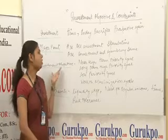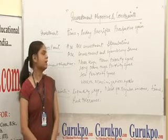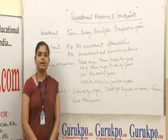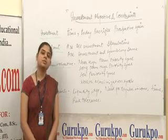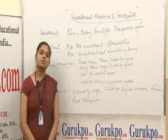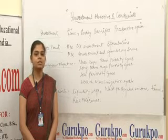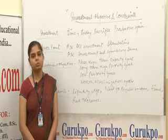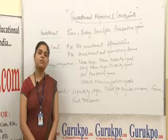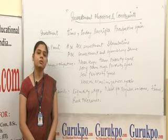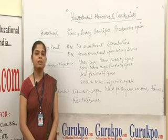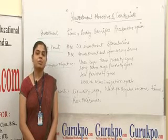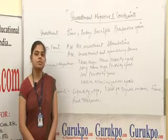Now we discuss investment objectives. The first investment objective is near high-term priority goals. These goals are generally relevant to the emotions of the investor, and the investor wants to achieve them very fast, or within a few years at most. For example, owning a house. Every investor wants their own house. The investment vehicles for achieving this goal are cash equivalent securities and fixed income securities.